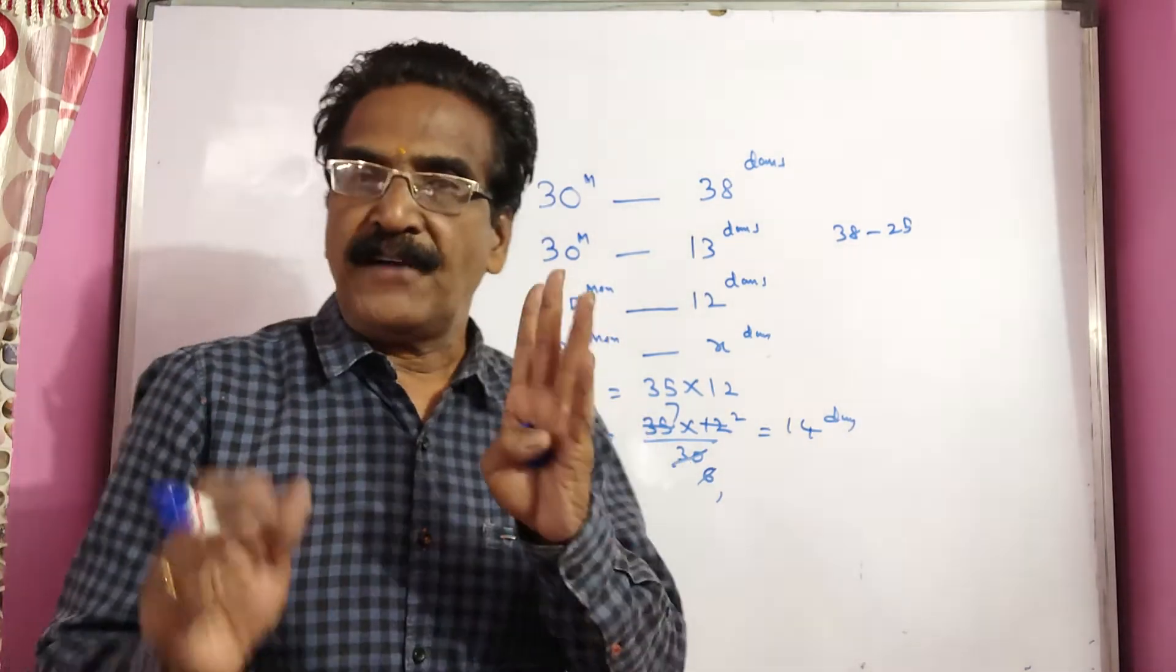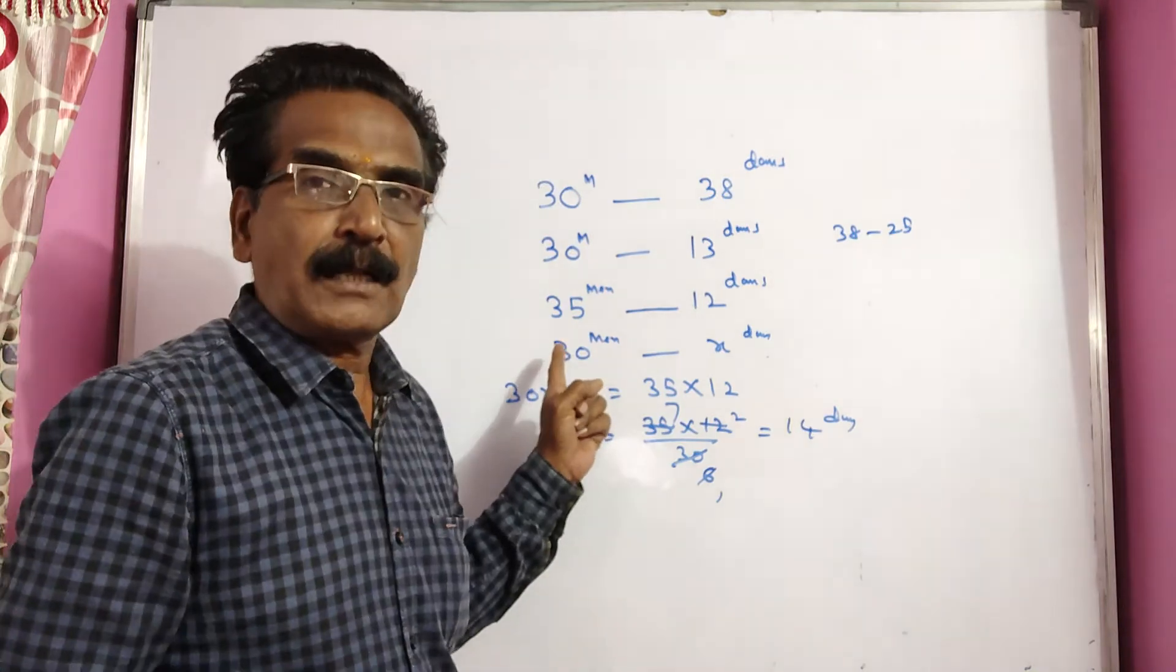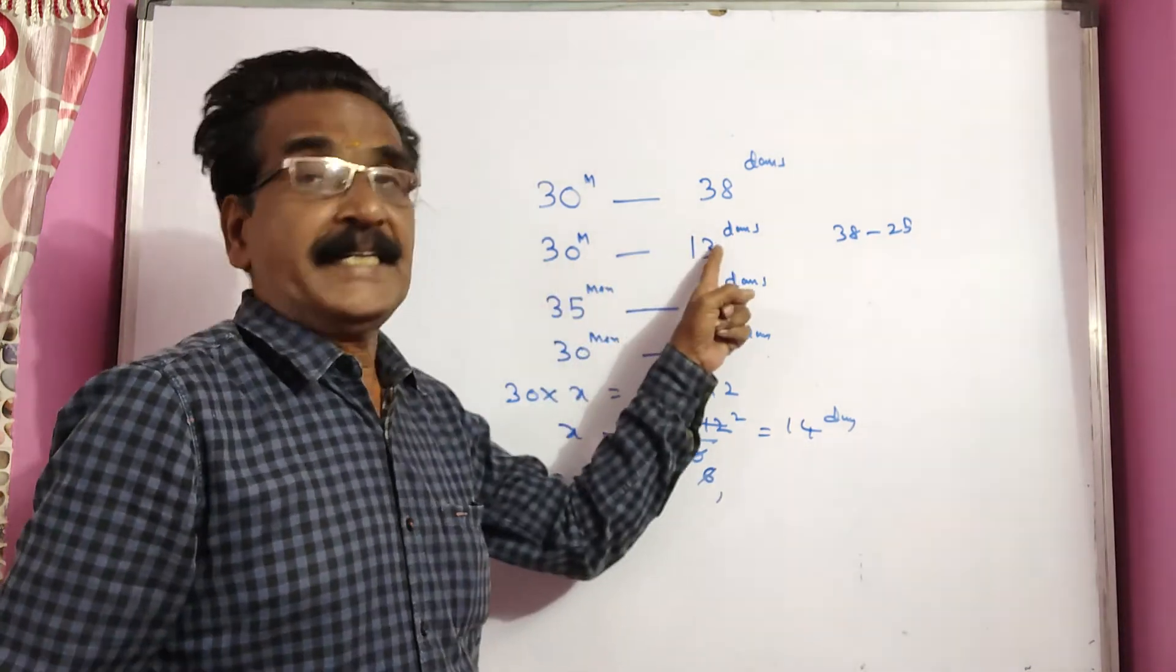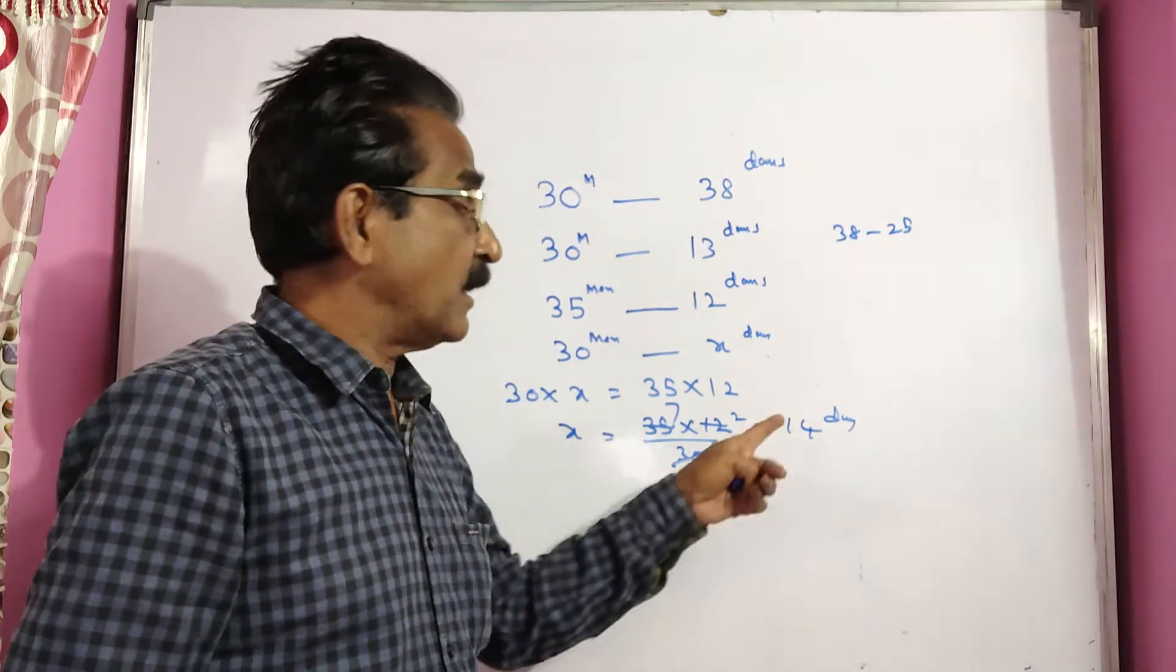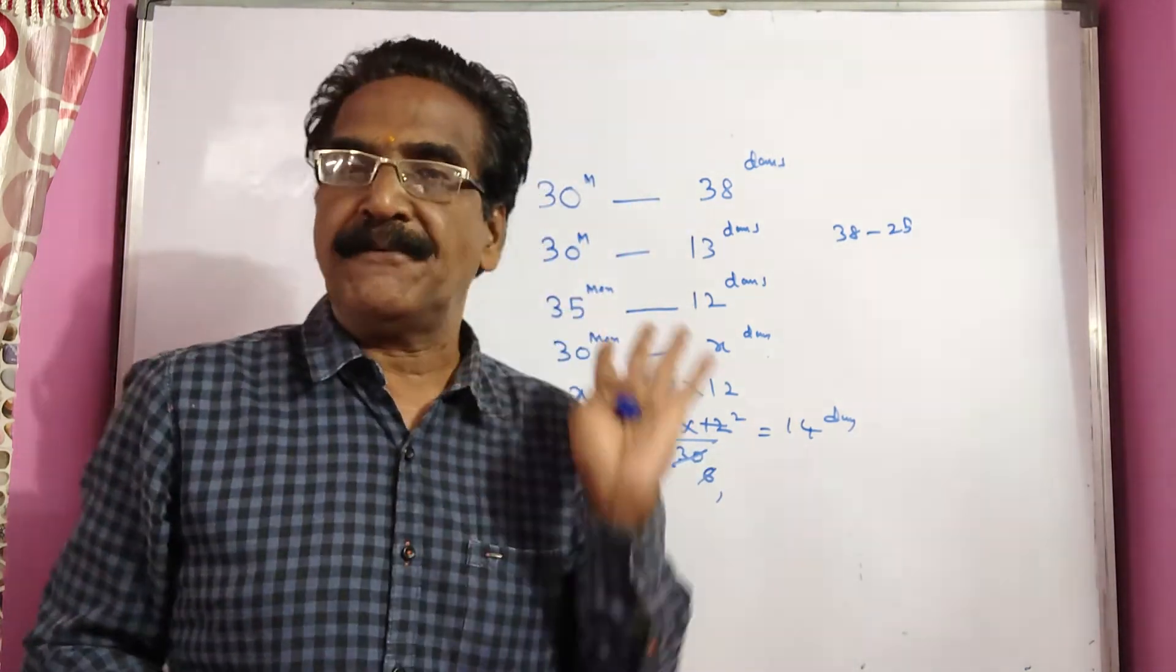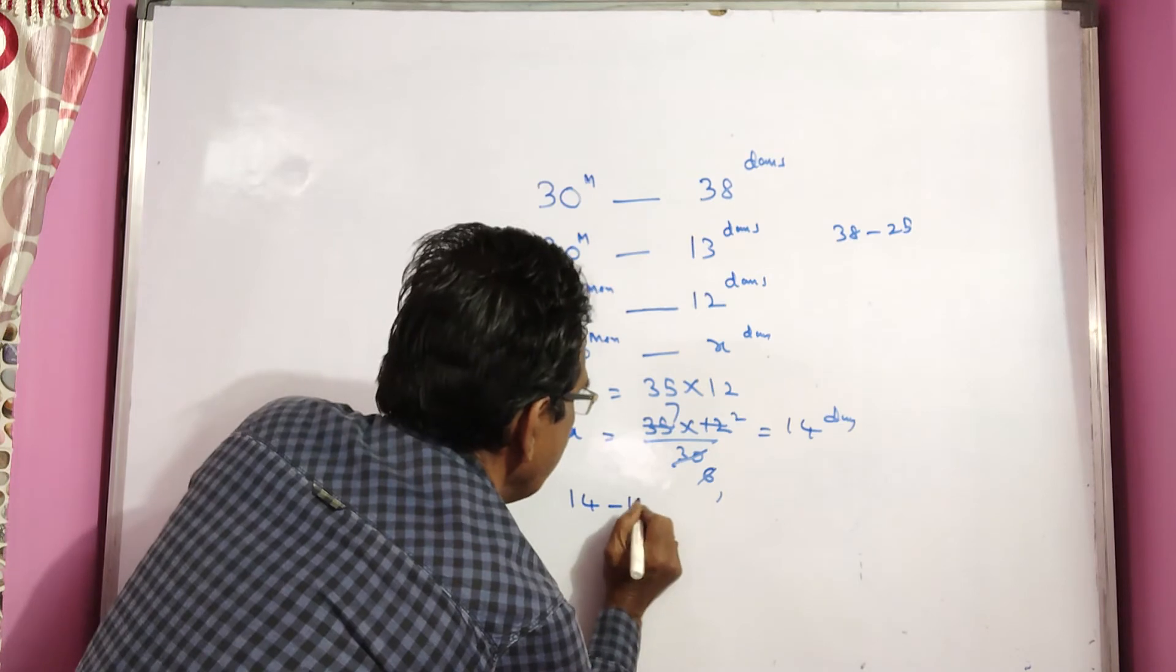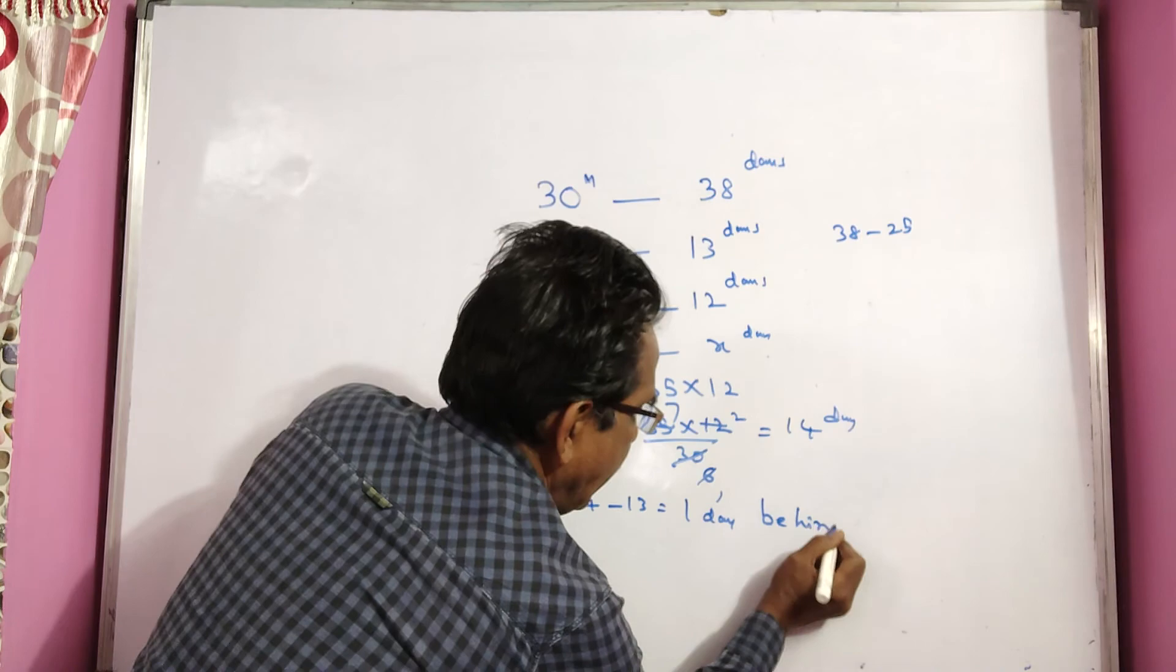So if the 5 men had not been appointed, the work would have been completed in 14 days. That is actually 13 days versus 14 days. That is 1 day behind. So 14 minus 13, that is equal to 1 day, 1 day behind.